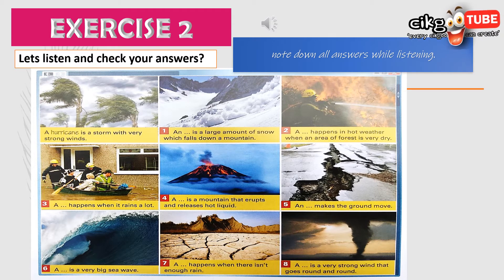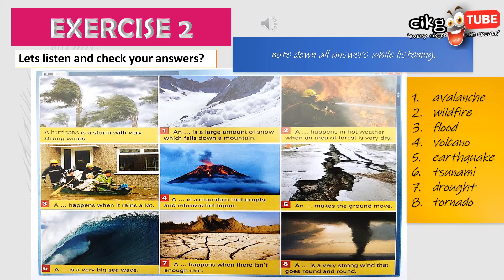A tornado is a very strong wind that goes round and round. I hope you have got all the answers — number one through number eight.